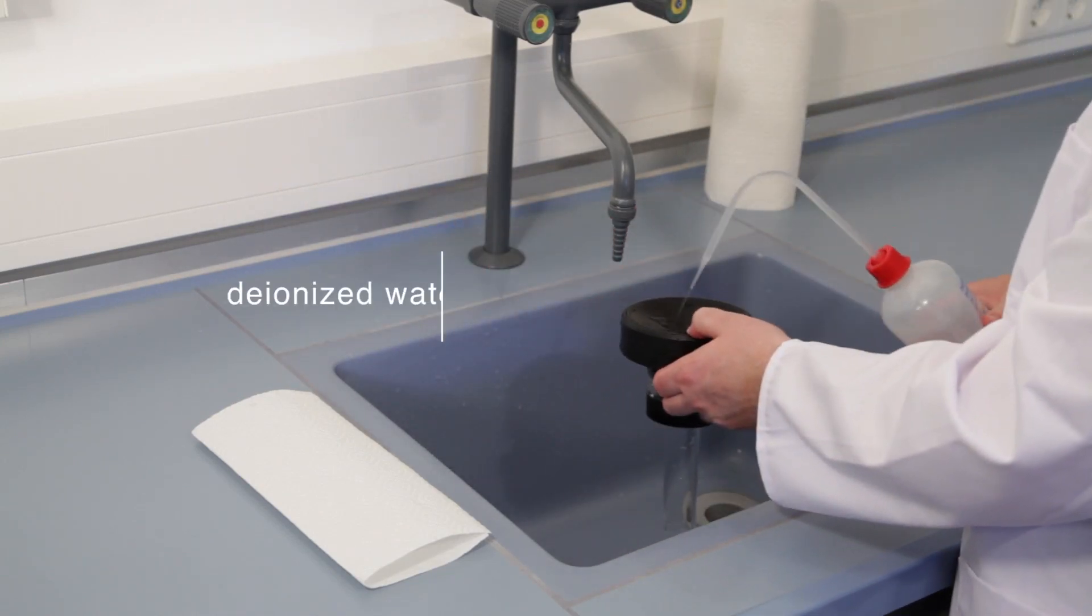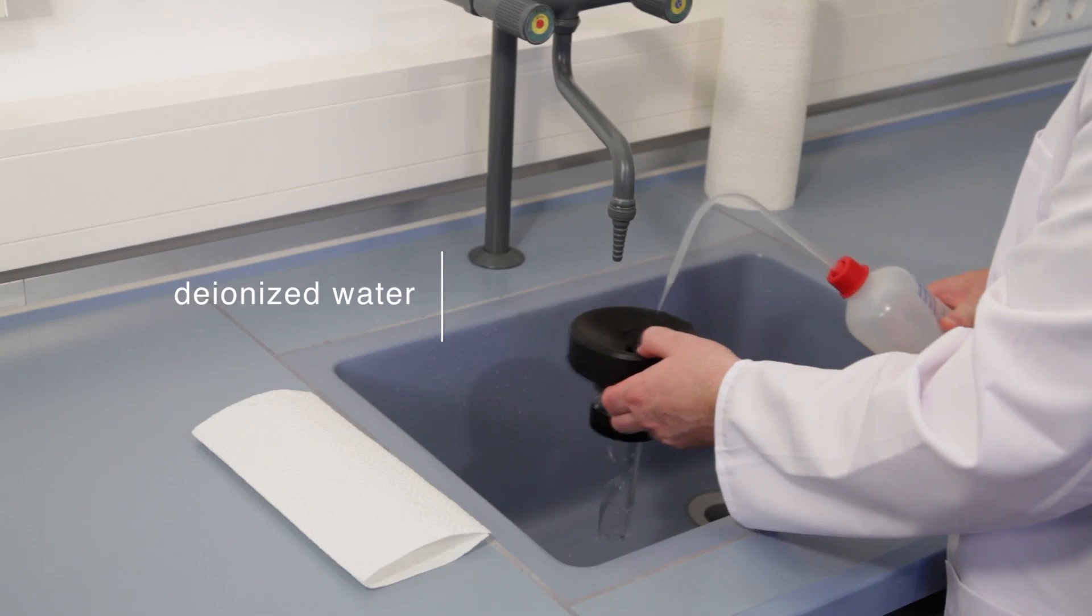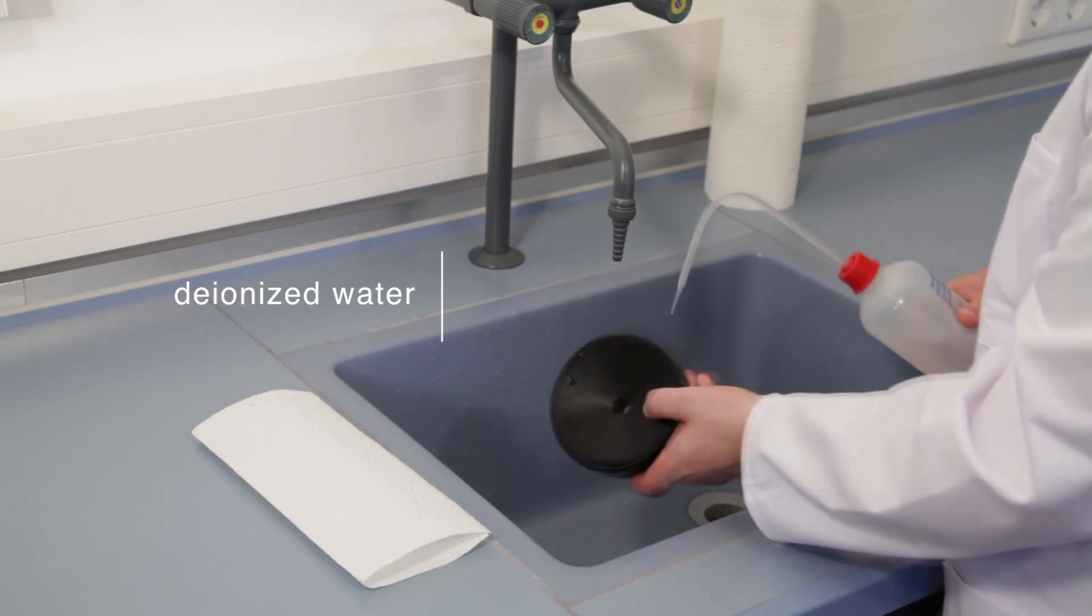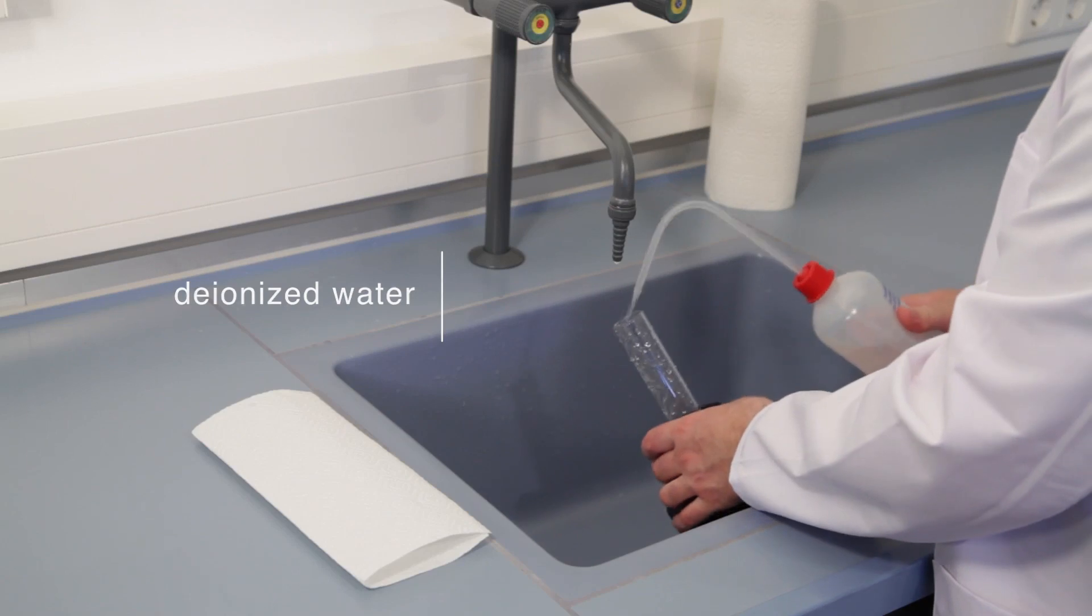Rinse the measuring cell also with deionized water to remove ions that could have been introduced into the cell with the tap water.